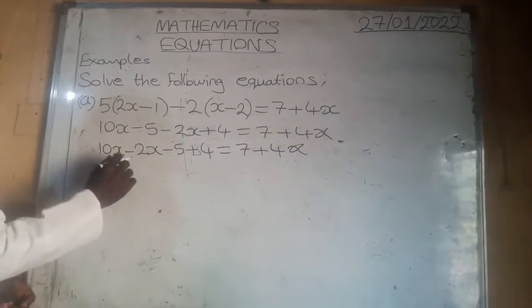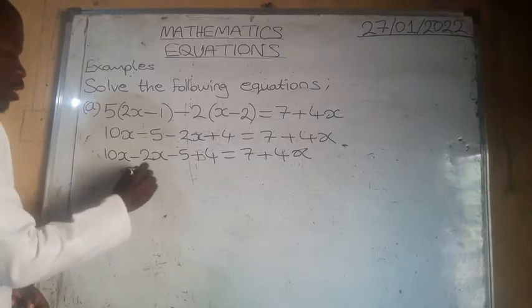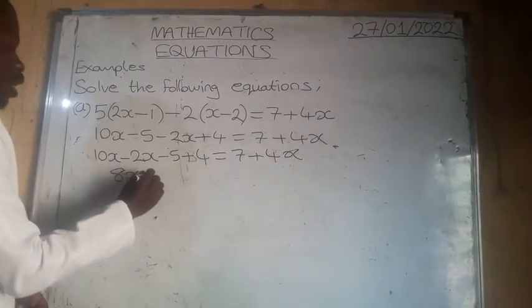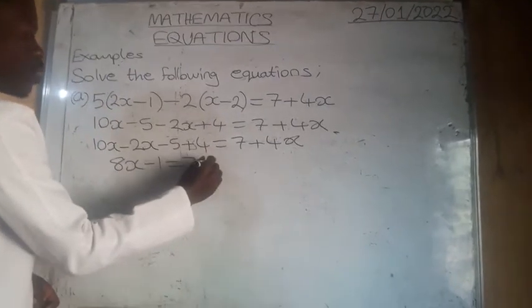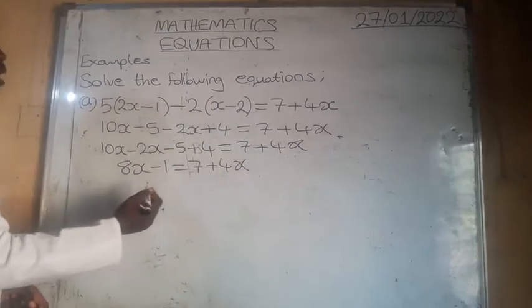So 10x minus 2x is 8x. Negative 5 plus 4 is negative 1, which is equal to 7 plus 4x. We still have to collect the like terms.